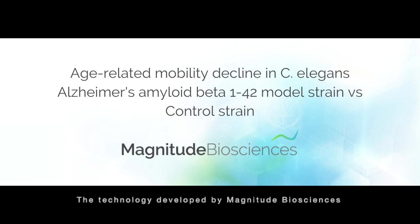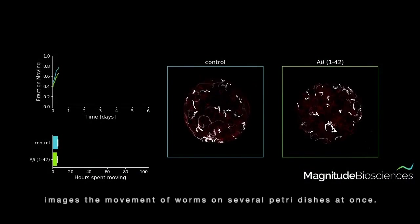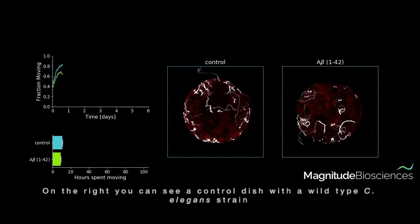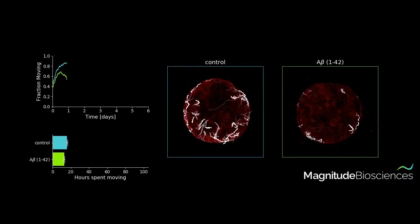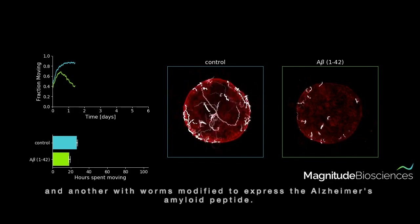The technology developed by Magnitude Biosciences images the movement of worms on several petri dishes at once. On the right you can see a control dish with a wild type C. elegans strain and another with worms modified to express the Alzheimer's amyloid peptide.